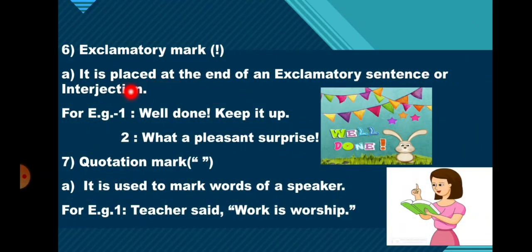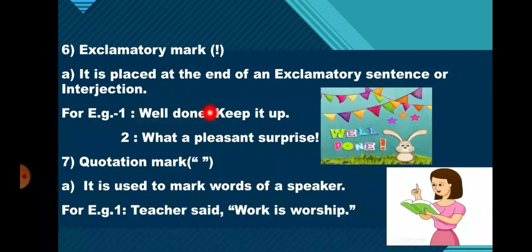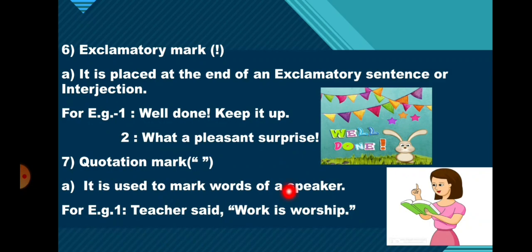The exclamation mark is placed at the end of an exclamatory sentence or interjection. For example: 'Well done! Keep it up!' and 'What a pleasant surprise!' So for interjections and exclamatory sentences, we put an exclamation mark. The quotation mark is used to mark the words of a speaker. For example: Teacher said, "Work is worship." So in order to mark the words of a speaker, we put the words in quotation marks.